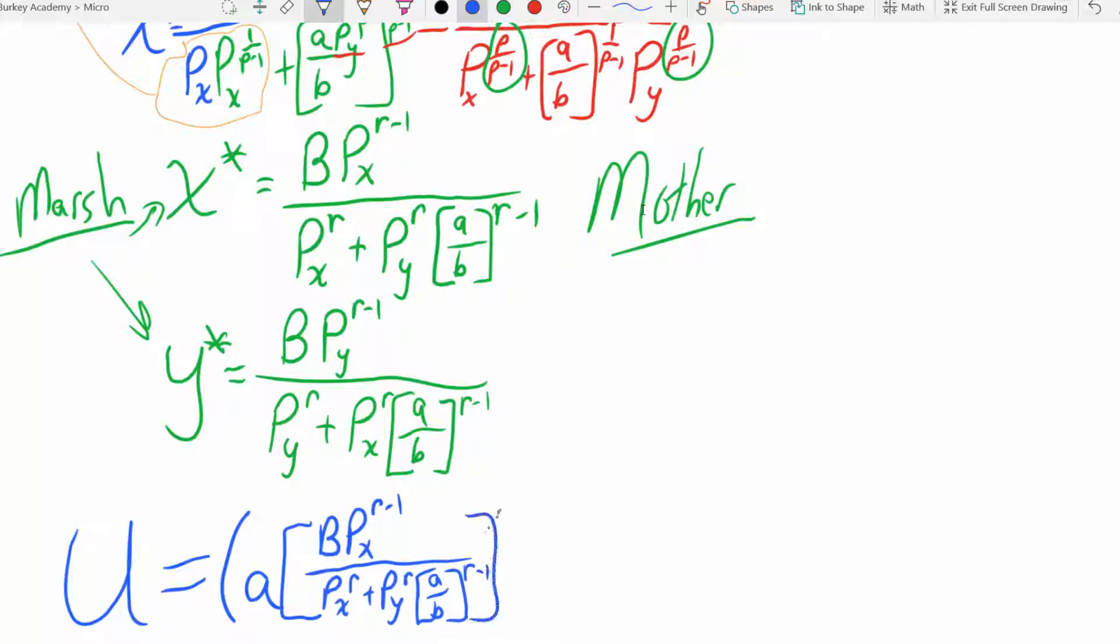Plus, and then over here we plug in y star. So we have b times budget price of y to the r minus one divided by price of y to the r plus price of x to the r, a over b to the r minus one.